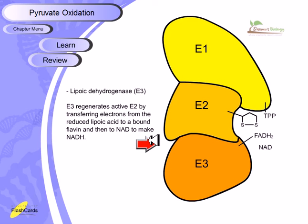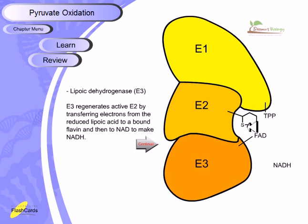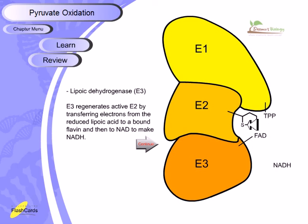E3 converts the reduced lipoic acid back into the oxidized form — where the two sulfurs are joined by a disulfide bond — by transferring hydrogens to FAD and then to NAD+, reducing it to NADH. This re-oxidized lipoic acid is required for carrying out further reaction steps. The third enzyme is therefore important to restore the enzymatic active site to its previous form for continued functionality.